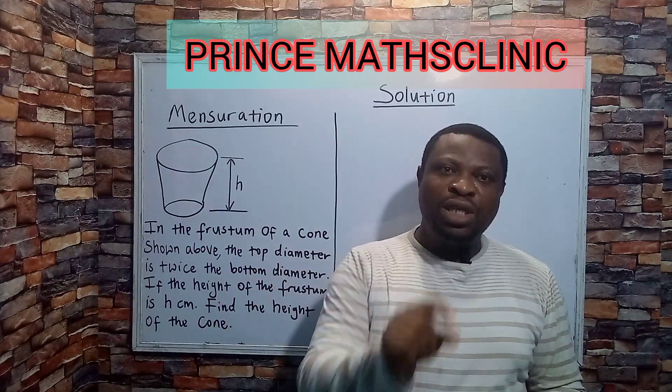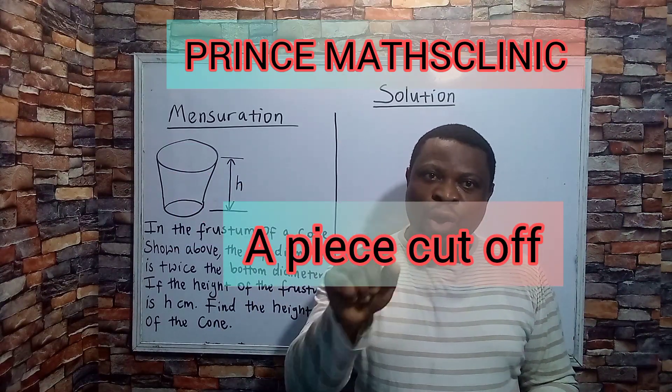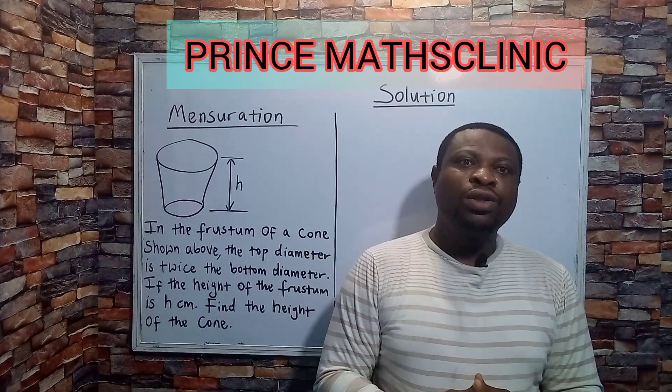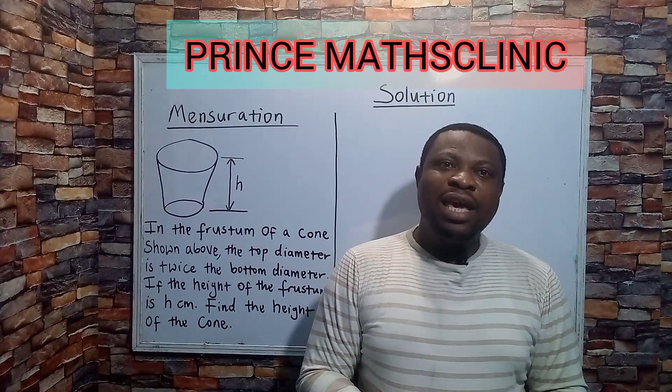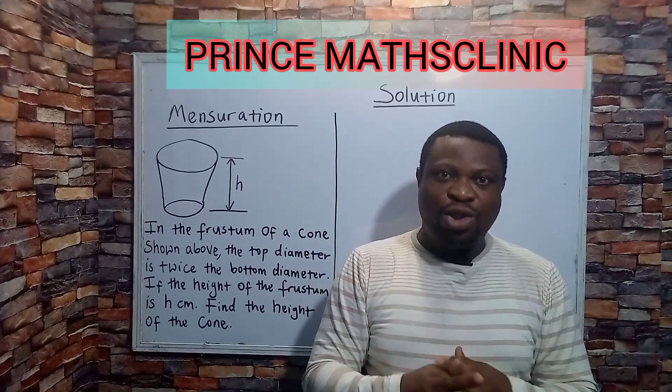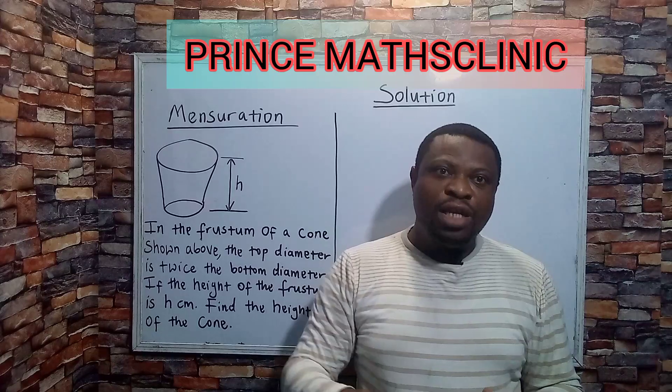A frustum, from that word, is derived from a Latin word which means a piece cut off. Now, in mensuration, when you have a solid - what's a solid? A solid means an enclosed shape. When you have a solid,